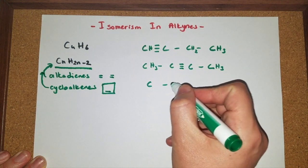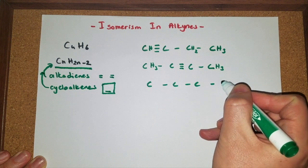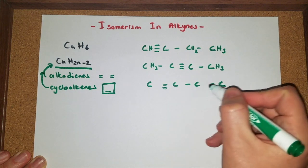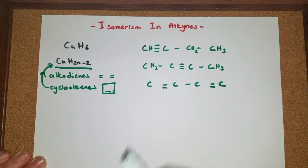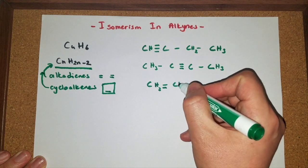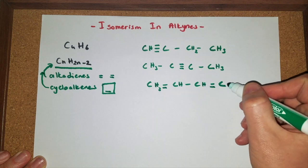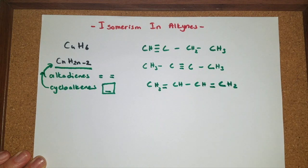We can have four carbon atoms again. This time, we have two double bonds. Then we have two hydrogens, one hydrogen, one hydrogen, and two hydrogens.